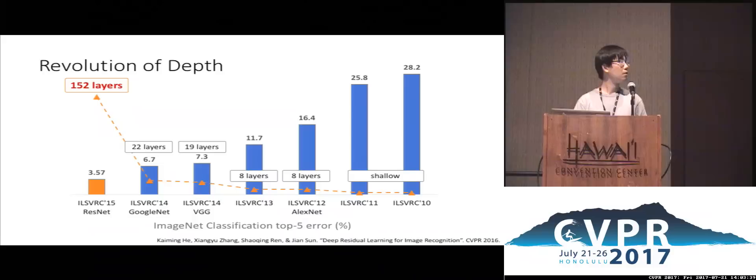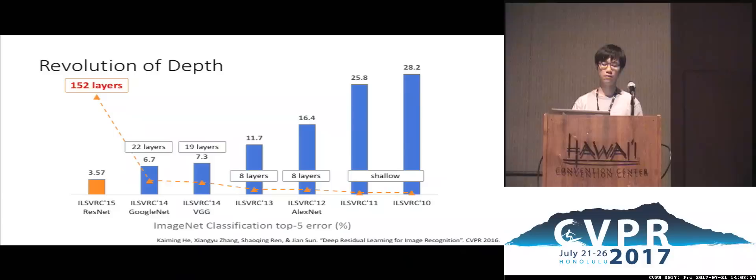In the past few years, we have been witnessing a revolution of depth. ImageNet classification is a very good benchmark for this revolution. In the first two years of this competition, the models were shallow and the accuracy was usually not very good. In the famous 2012 AlexNet, one of the first convolutional neural networks applied to this large-scale dataset, greatly reduced error rates by about 10%.